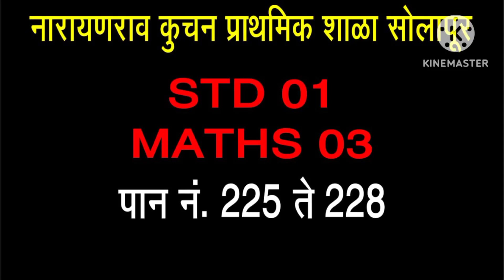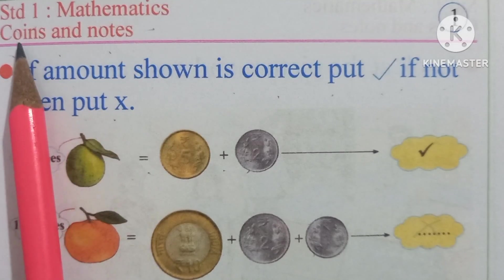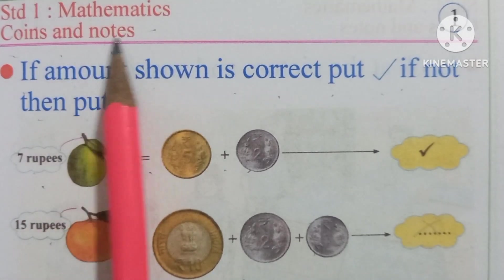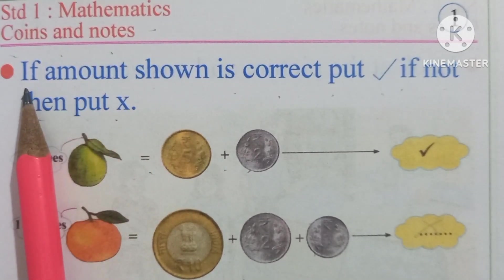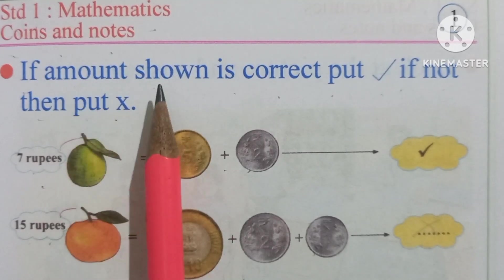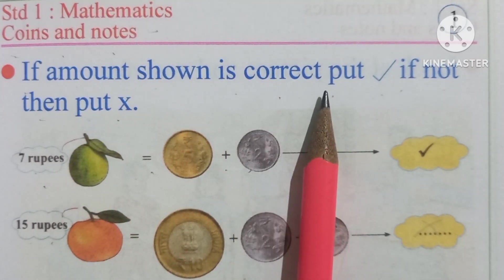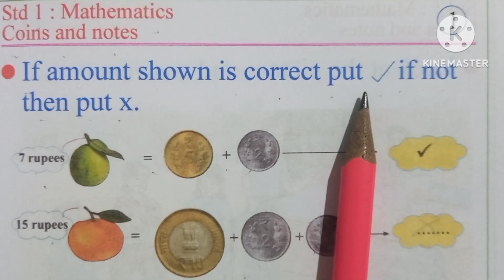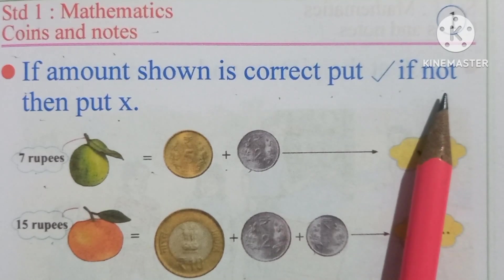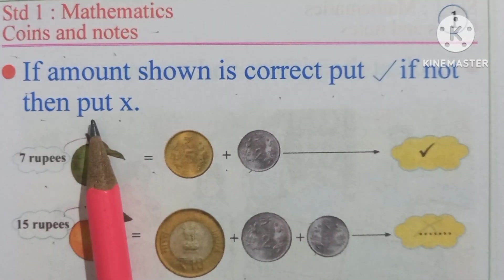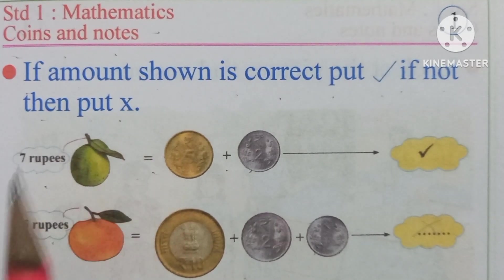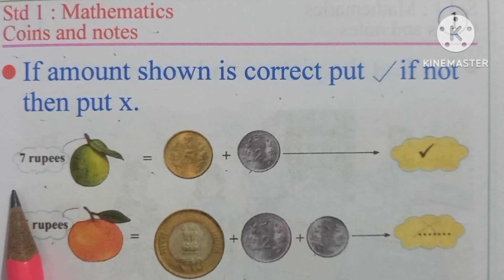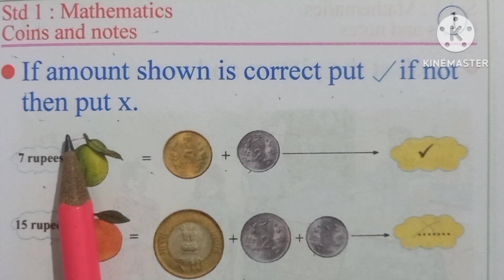Narendra Kuchan Prathamik Shah, Standard 1st Maths, Part 3, Pages 225 to 228. Coins and Notes: if the amount shown is correct, put a correct sign. If not, then put a wrong sign. Here is a picture of fruit.